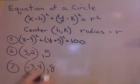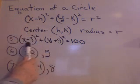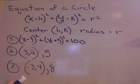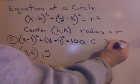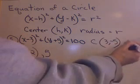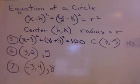Here's some more. Again, using the equation of the circle, if I look at number 5 here, what's the center? Hopefully you know the center is 3, negative 5. What's the radius? 10.